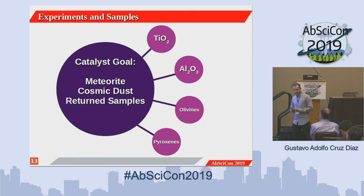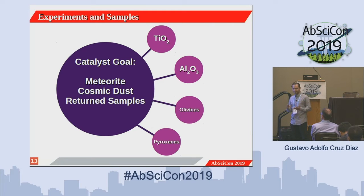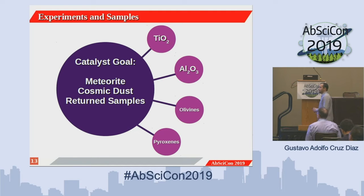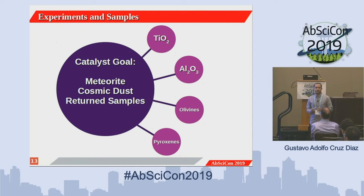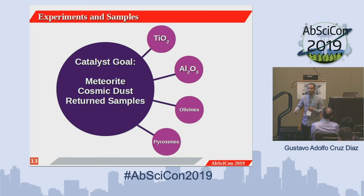Our goal is to work as realistically as possible. For that, we want to study the composition of meteorites or cosmic dust. As you may know, there is no such thing as just one meteorite composition — it's a full range of different elements, which makes this study really difficult. So we start with simple things: titanium dioxide and aluminum oxide, and we are building ourselves up to more complex minerals like olivines and pyroxenes.